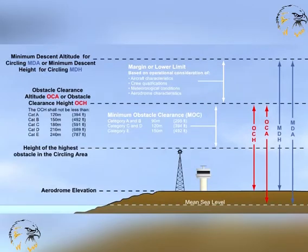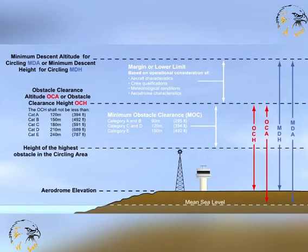The OCA or H for a visual manoeuvring procedure is the lowest altitude, or height above aerodrome elevation, below which the aeroplane cannot descend without infringing the appropriate obstacle clearance criteria. The minimum descent altitude or height, MDA or H, for a visual manoeuvring procedure is the lowest altitude or height above aerodrome elevation below which the aeroplane cannot descend without seeing the required visual references. Hopefully, the pattern has now become obvious.